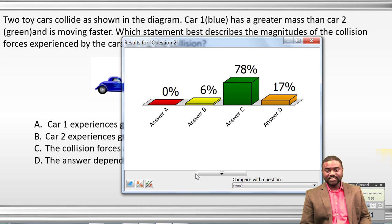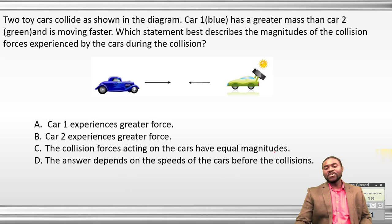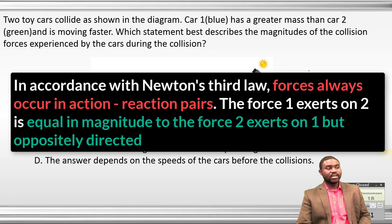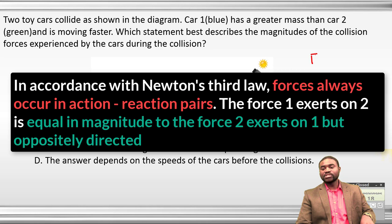About 17% feel the answer is D, and 78% think the answer is C. Understand that Newton's third law basically states that forces are always created in pairs, and the force that one asserts on two is equal to but opposite to the force that two asserts on one.